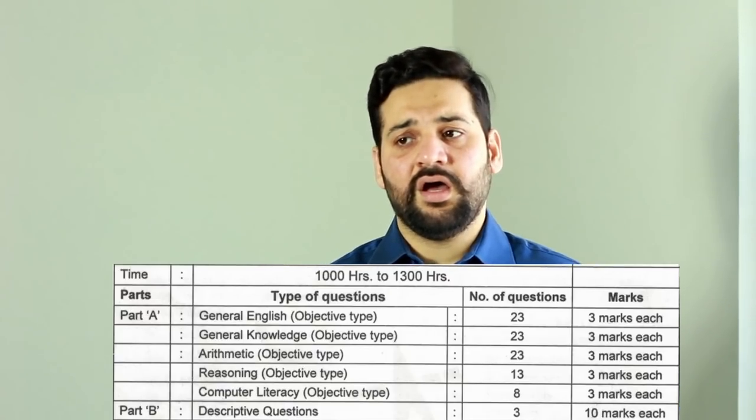For General English, last year there was no reading comprehension, which is great. Questions were easy — error spotting, vocabulary, para jumbles, fill in the blanks, and spot grammatical mistakes. About 10 questions came from error spotting. Previous years' papers are available on the official ISRO website; the link is in the description. If you are already preparing for SBI or IBPS, you won't find difficulty in this section.